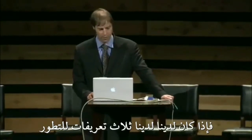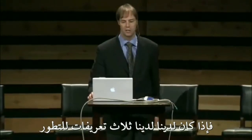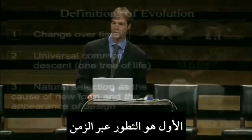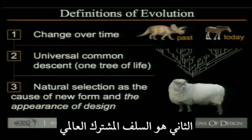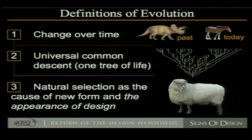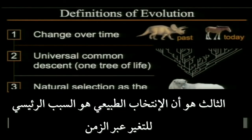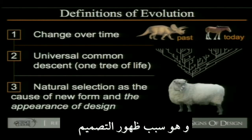So if you have three definitions of evolution — evolution number one: change over time; evolution number two: universal common descent; evolution number three: natural selection as the chief cause of change over time and the cause of the appearance of design — the theory of intelligent design is challenging that third meaning.